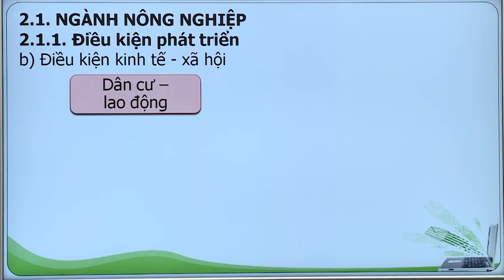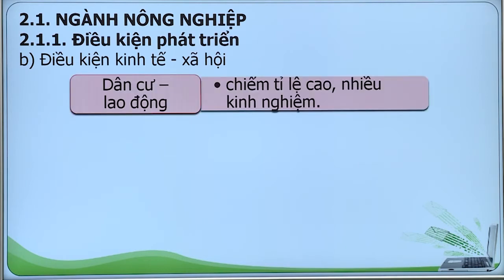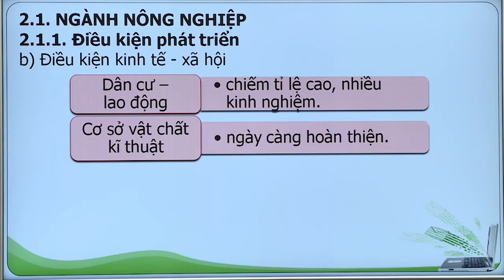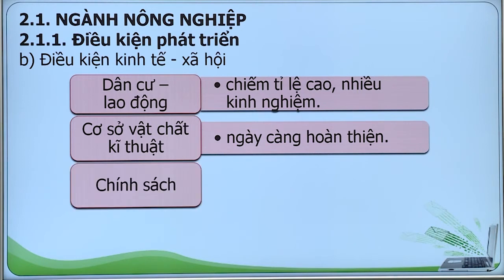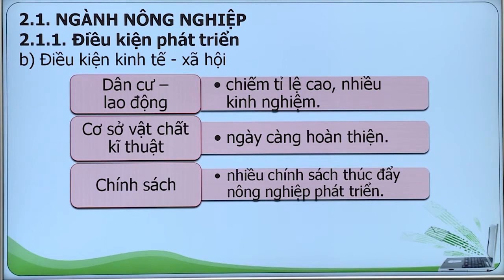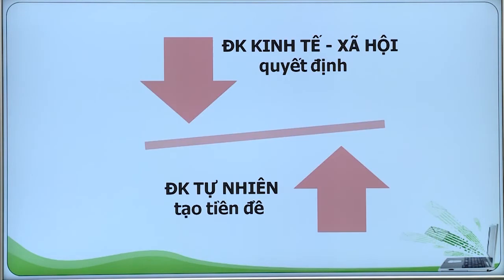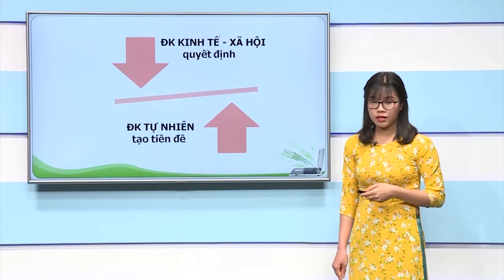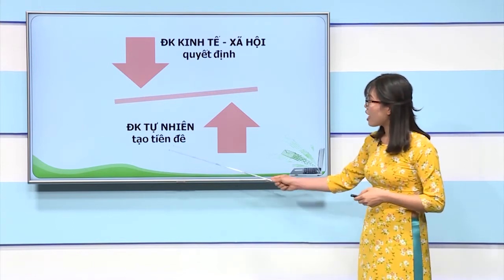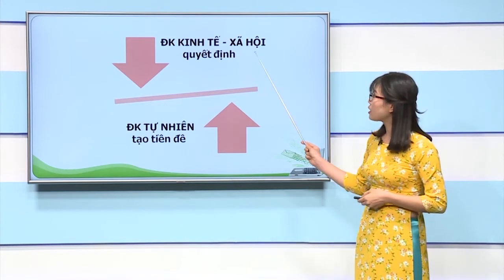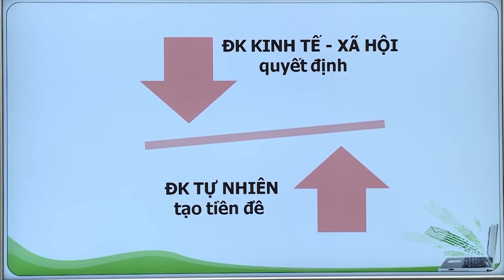Về điều kiện kinh tế xã hội: về dân cư lao động, nguồn lao động trong ngành nông nghiệp chiếm tỷ lệ cao, người lao động có nhiều kinh nghiệm trong sản xuất nông nghiệp. Về cơ sở vật chất kỹ thuật, ngày càng hoàn thiện; các em cần chú ý đến vai trò quan trọng của các cơ sở chế biến. Về chính sách, nước ta có nhiều chính sách khuyến khích phát triển nông nghiệp. Về thị trường, cả thị trường trong và ngoài nước đều ngày càng được mở rộng. Kết luận: điều kiện tự nhiên tạo tiền đề, còn điều kiện kinh tế xã hội quyết định tạo nên những thành tựu to lớn trong nông nghiệp.